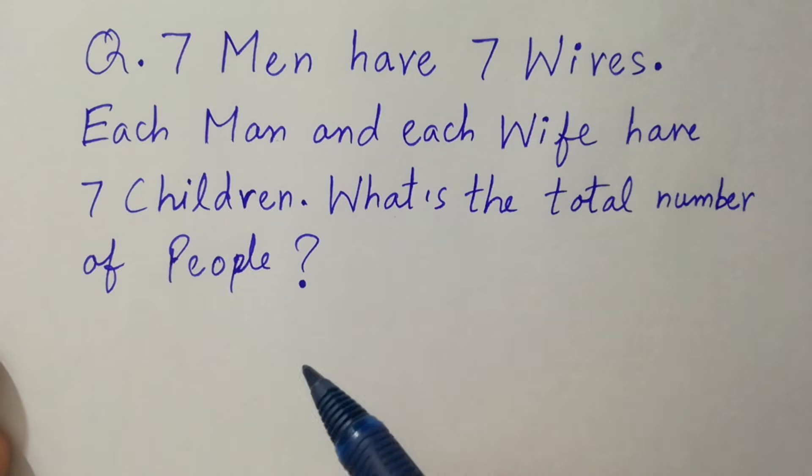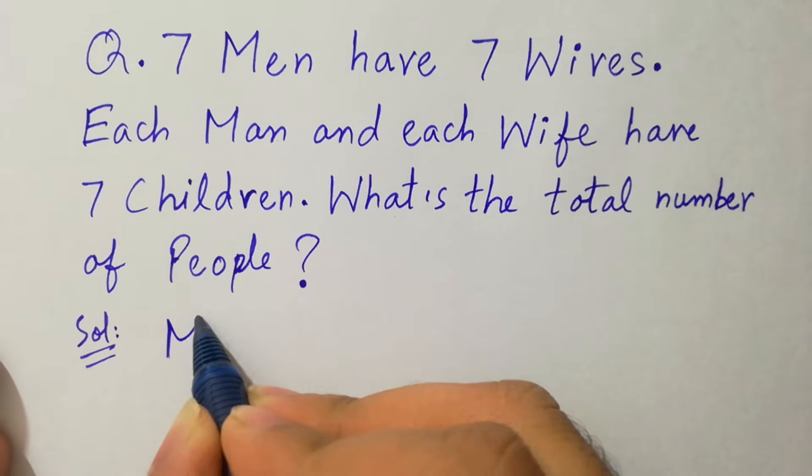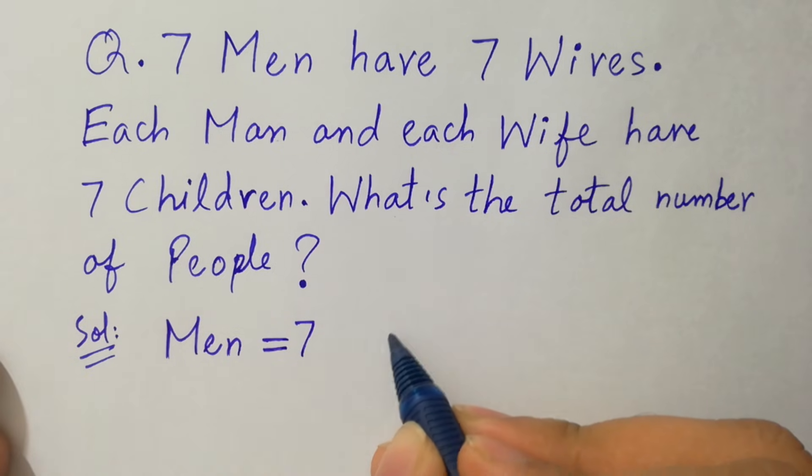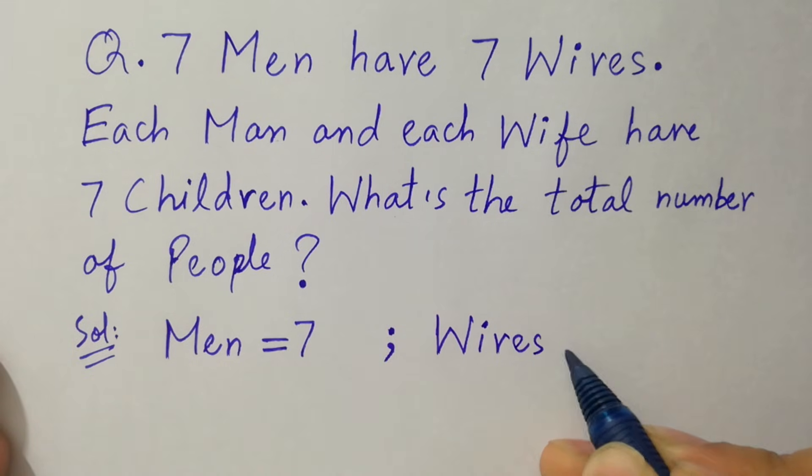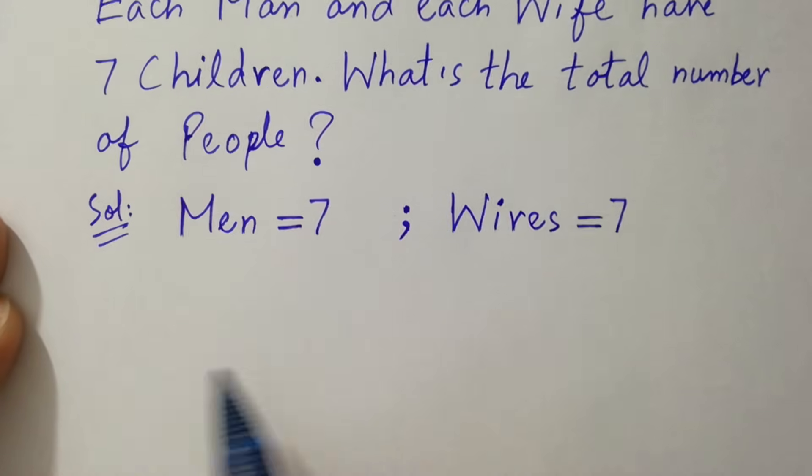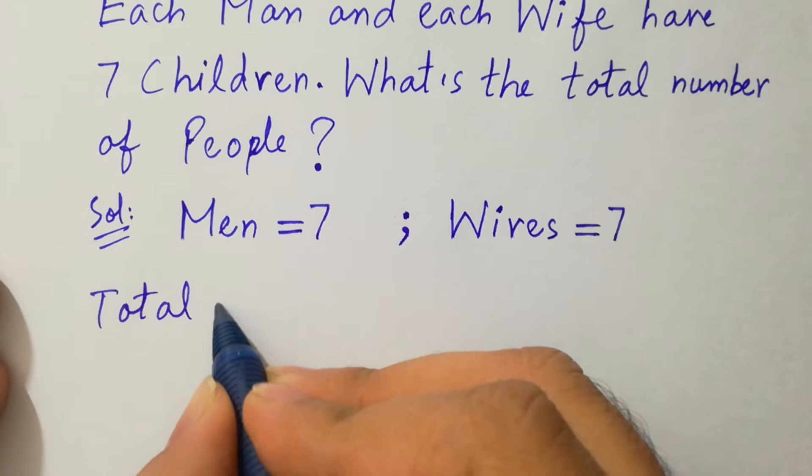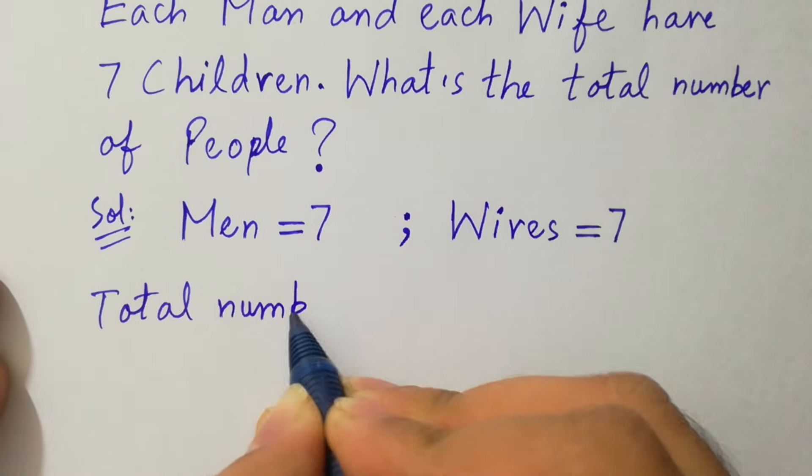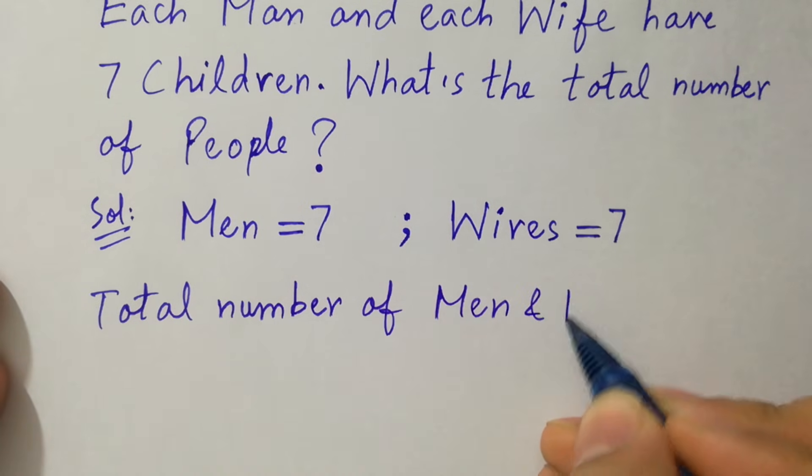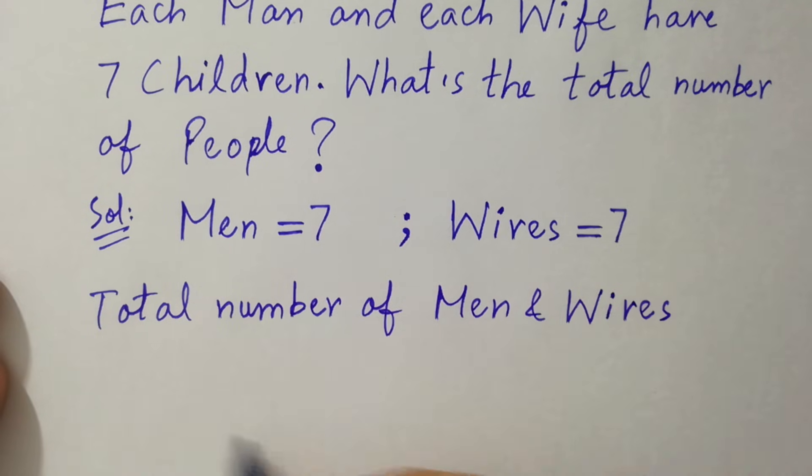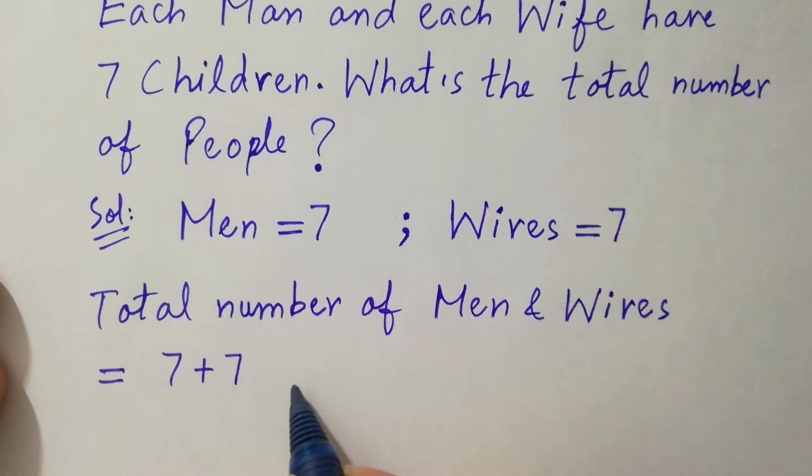What's the total number of people? Let's have a solution. First line is men are seven and wives are seven. The total number of men and wives will be equal to seven plus seven, which is fourteen.